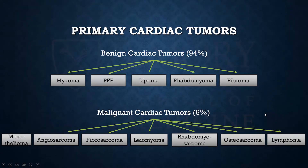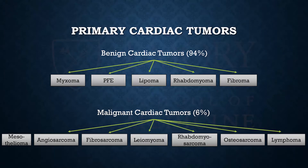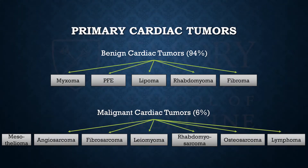That concludes the talk on metastatic tumors. Moving into primary cardiac tumors: it's important to know that primary cardiac tumors are much, much more rare. Of primary cardiac tumors, 90% to 94% are benign and generally amenable to surgical resection, whereas only 6% are malignant. Having a malignant cardiac tumor is extraordinarily rare, requiring a very high clinical index of suspicion.